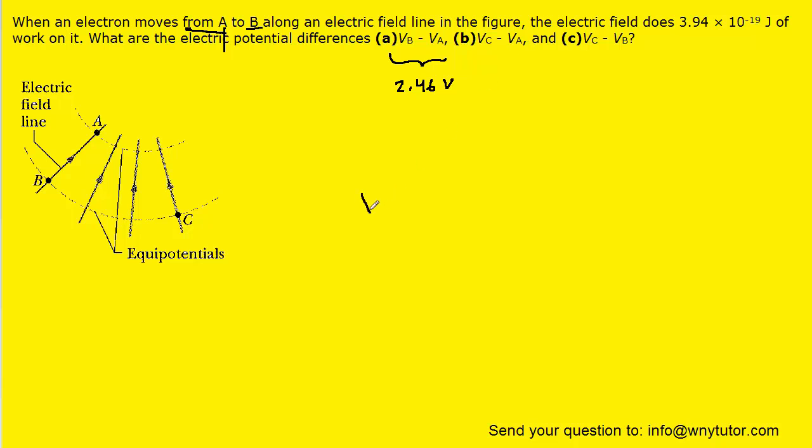We can now move on to part B, which asks for the potential difference VC minus VA. And if we go back to the diagram, what we'll notice is that point B and point C lie on the same equipotential line. That means that the potential at B is going to be the same as the potential of C. So really, when they write VC in this equation, we can actually think of that also as VB minus VA.